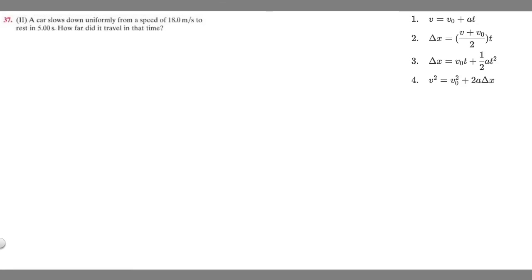In this problem, a car slows down uniformly from a speed of 18 meters per second to rest in five seconds. How far did it travel in that time? I'm going to draw a diagram to help show